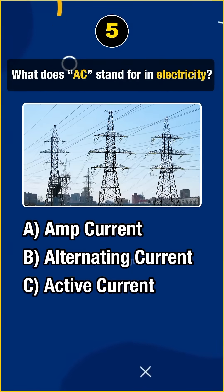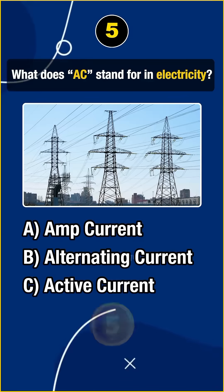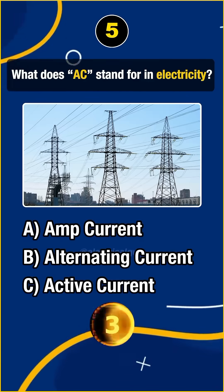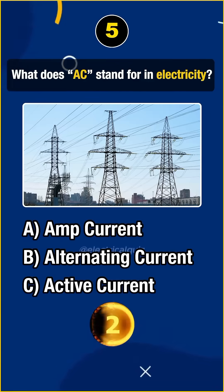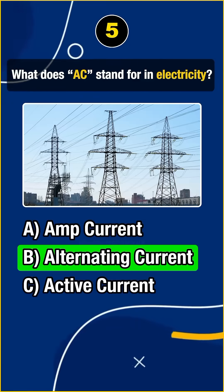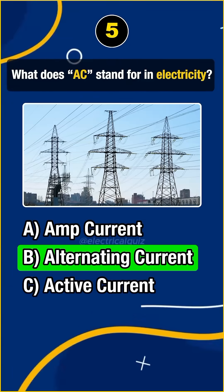Question 5. What does AC stand for in electricity? Answer: B. Alternating current.